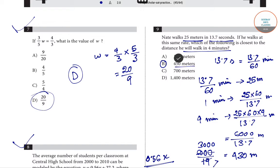The nearest option to 430 meters is option B, which is 450 meters. You can also calculate 6000 / 13.7 directly with a calculator, but here we manually calculated by approximating 13.7 as 14, giving approximately 430 meters. The nearest answer is 450 meters.